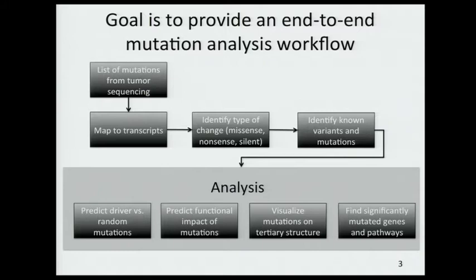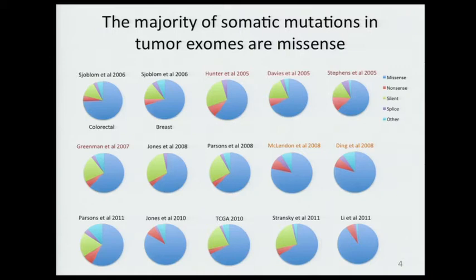This seems like a tall order, so the first goal has been to focus only on missense mutations. I realize these are not the only interesting mutations in cancer genomes; however, there are a lot of them. Looking at the distribution of different kinds of mutations seen in exomes, missense really are a large majority of mutations we're seeing. There are also a very large number of tumor exome sequencing projects now in progress or completed, so we thought this was a good place to start.